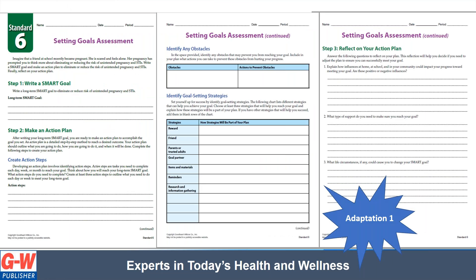If the first assessment did not meet your students' needs, here is adaptation idea one. For this assessment, students will write a long-term SMART goal related to eliminating or reducing the risk of unintended pregnancy and sexually transmitted infections. In step two, they're going to create an action plan and develop action steps. And then in step three, they're going to reflect on their action plan.